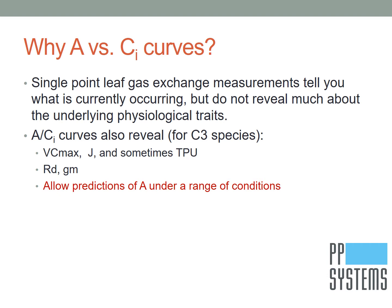For C3 species, A/Ci curves also reveal the maximum carboxylation capacity of Rubisco, the electron transport rate, the respiration rate, mesophyll conductance, and often the triose phosphate utilization rate. These additional parameters are extremely useful for researchers and allow predictions of photosynthetic rates over a range of environmental conditions.